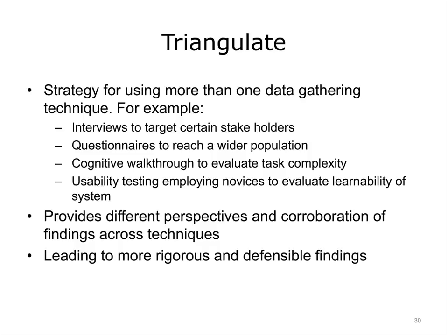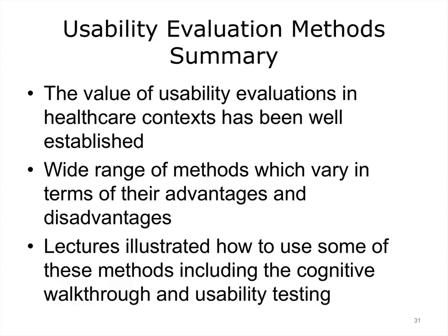Triangulation is a strategy in which you use more than one method to derive conclusions about system performance. It provides different perspectives and corroboration of findings across techniques. For example, it can be quite useful to survey a large number of users and conduct usability testing with a much smaller group — e.g., five or six users. The use of multiple methods also leads to more rigorous and defensible findings.